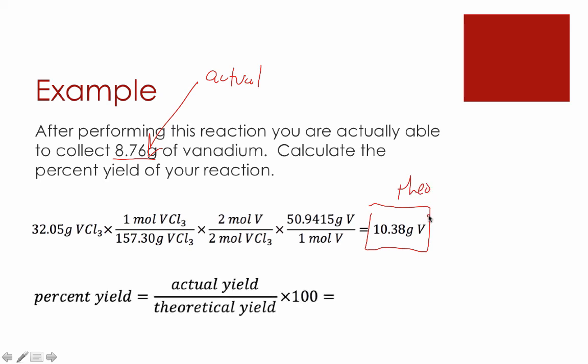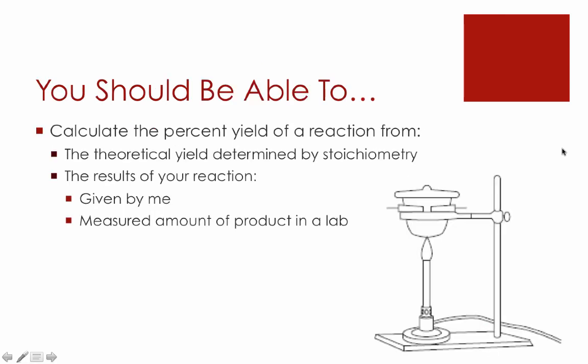We remember that our equation for percent yield is the actual yield divided by the theoretical. We can take our actual yield data of 8.76 grams, divided by the theoretical yield, what we should have gotten, the 10.38 grams, and we found out that this reaction was able to produce 84.4% of the amount of product it should have ideally made. We have an 84.4% yield. And that's pretty much it.